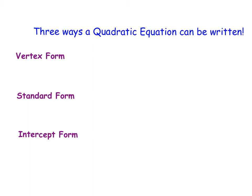There are three main ways that a quadratic equation or function can be written. The first you should be familiar with already as we saw it in chapter 1, and that's our vertex form.